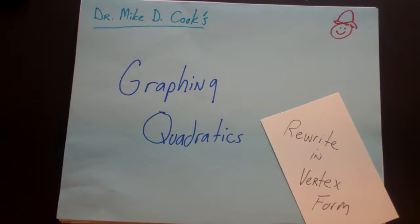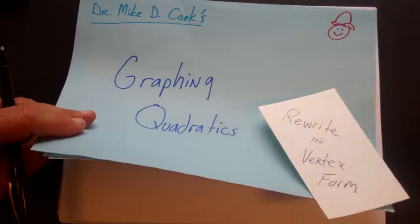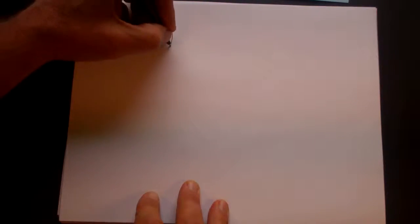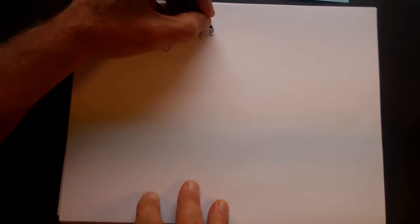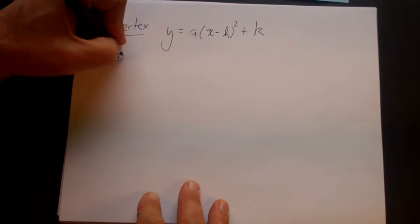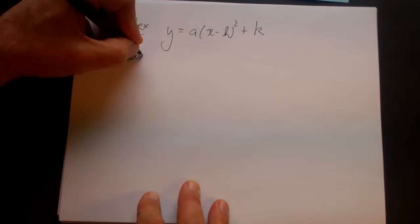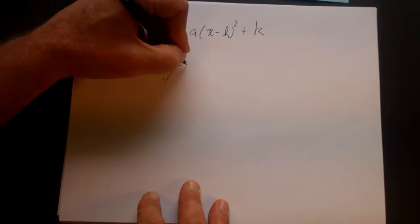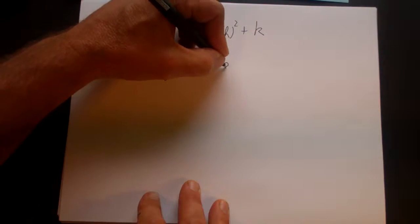In this video, we look at how to rewrite quadratic functions in vertex form. First of all, why would we do that? Part of the reason is because when it's written in vertex form, remember, vertex form is y equals a times x minus h squared plus k.